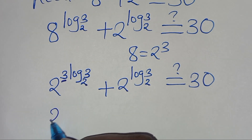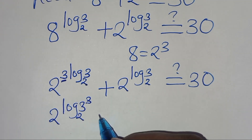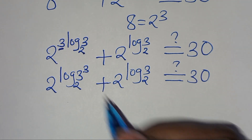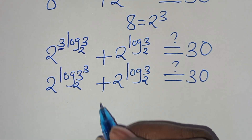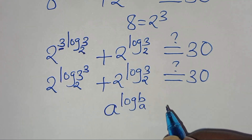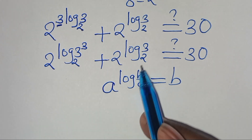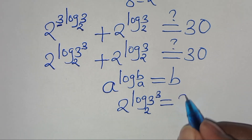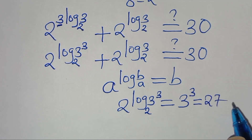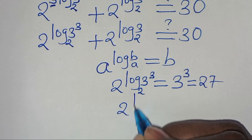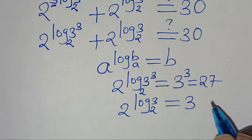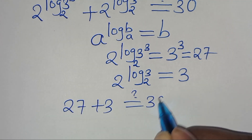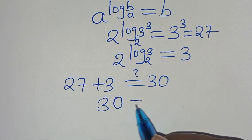Since 3 is a power, this is the same as 2 to the power of 3 raised to the power of log 3 to base 2, plus 2 to the power of log 3 to base 2. Using the property that a to the power of log b to base a equals b, we get 2 to the power of log 3 to base 2 raised to the power of 3, which equals 3 to the power of 3, and 3 cubed equals 27. Substituting, we have 27 plus 3, which gives 30, and this equals 30.